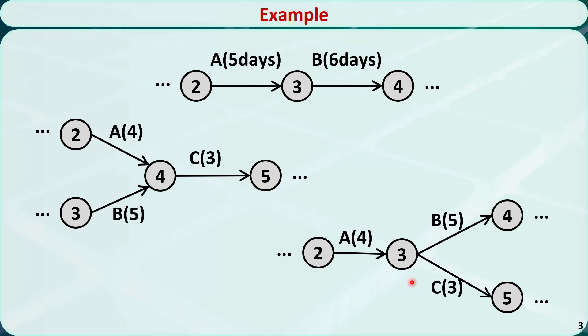These project networks are called activity-on-the-arc networks. There is another type of project network called activity-on-the-node networks, which will not be covered in this video.